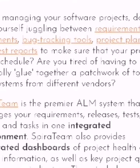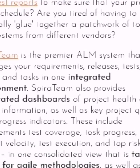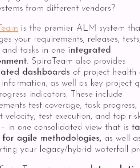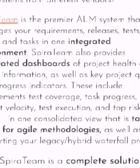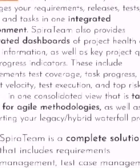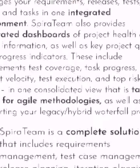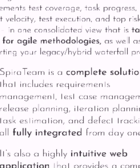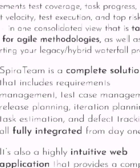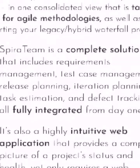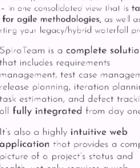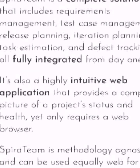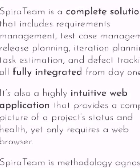Why choose SpiraTeam as your ALM tool? When managing your software projects, do you find yourself juggling between requirements documents, bug tracking tools, project plans, and test reports to make sure your project is on schedule? Are you tired of having to manually glue together a patchwork of tools and systems from different vendors? SpiraTeam is the premier ALM system that manages your requirements, releases, tests, issues, and tasks in one integrated environment. SpiraTeam also provides integrated dashboards of project health and status information, as well as key project quality and progress indicators — including requirements test coverage, task progress, project velocity, test executions, and top risks and issues — in one consolidated view tailored for agile methodologies.